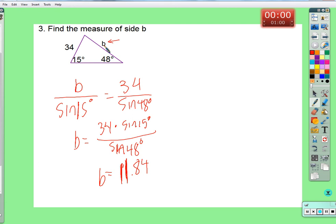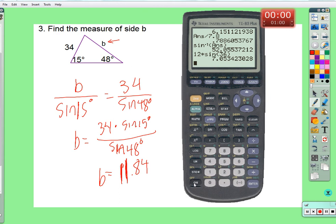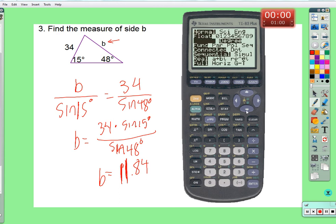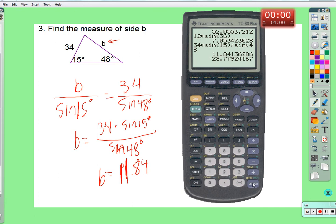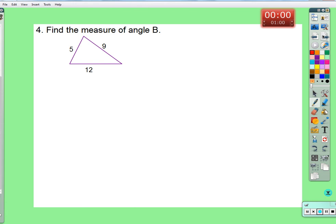Did I get that right? 11.78. 34 times the sine of 15 divided by the sine of 48. I don't know how we got .7 instead of .8. I didn't try to round it wrong. Kevin, if you round it wrong, you got some problems.